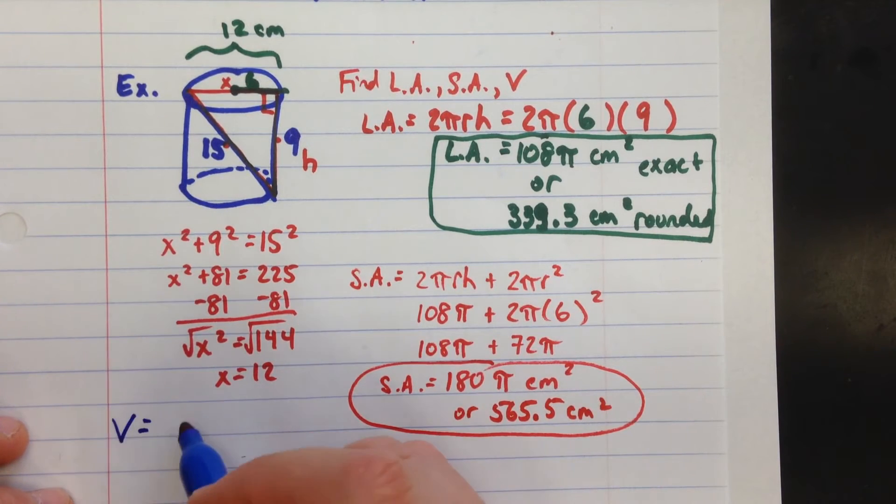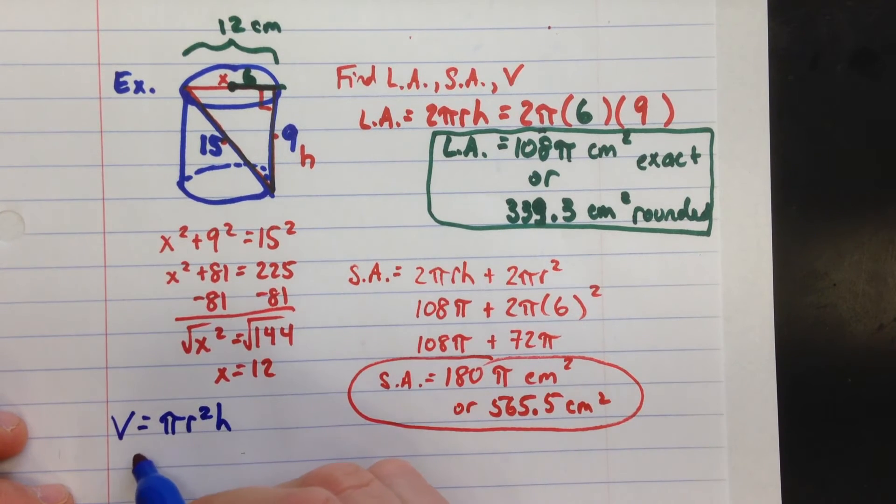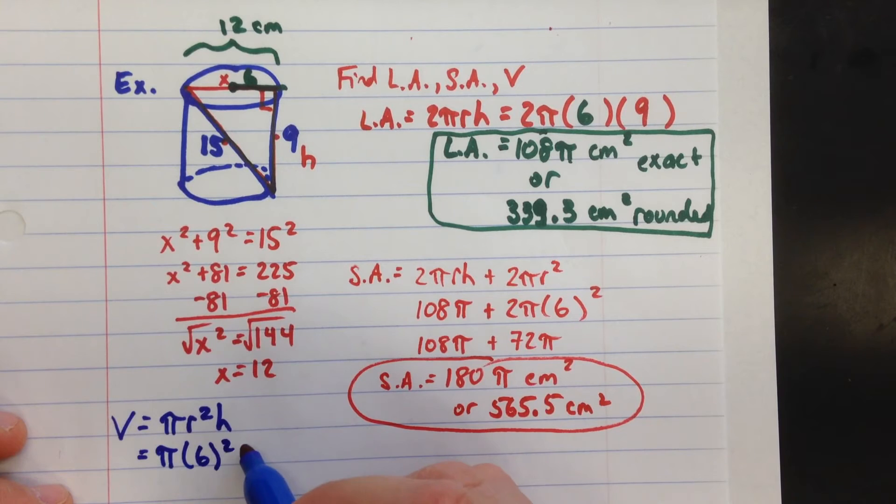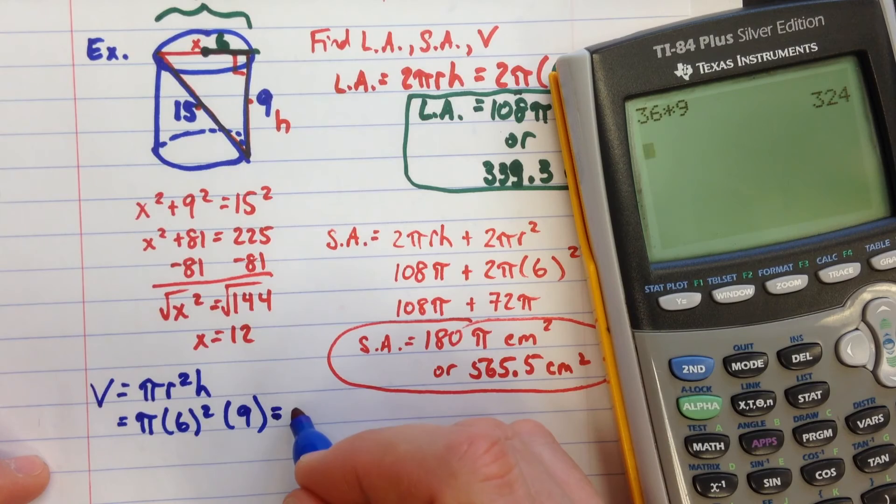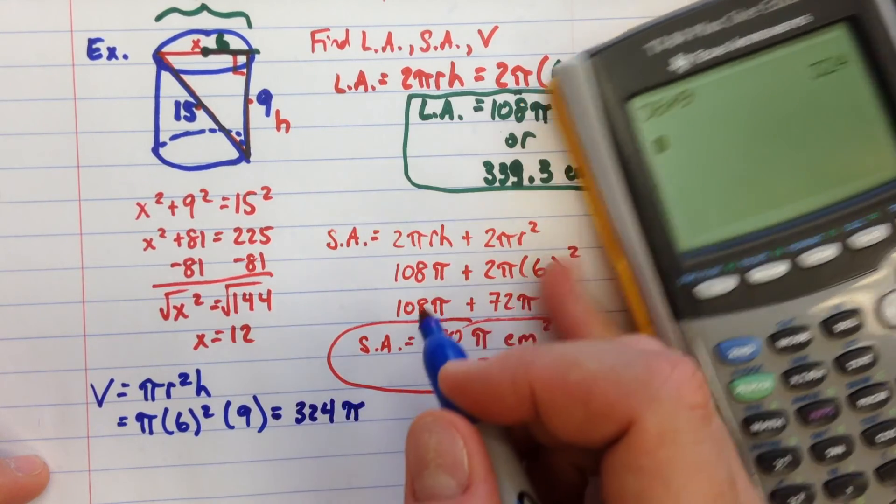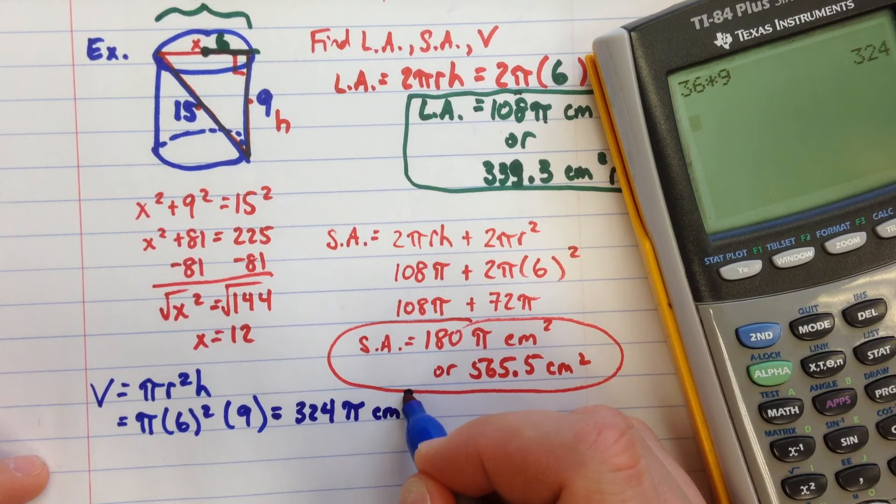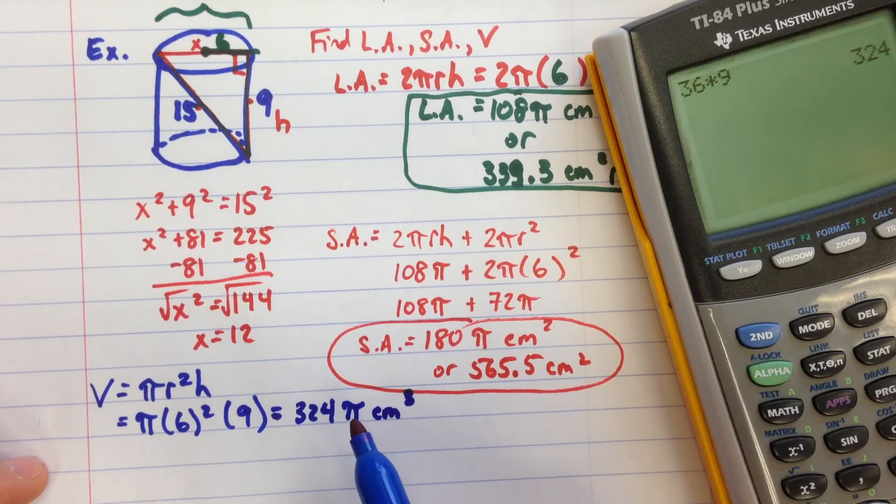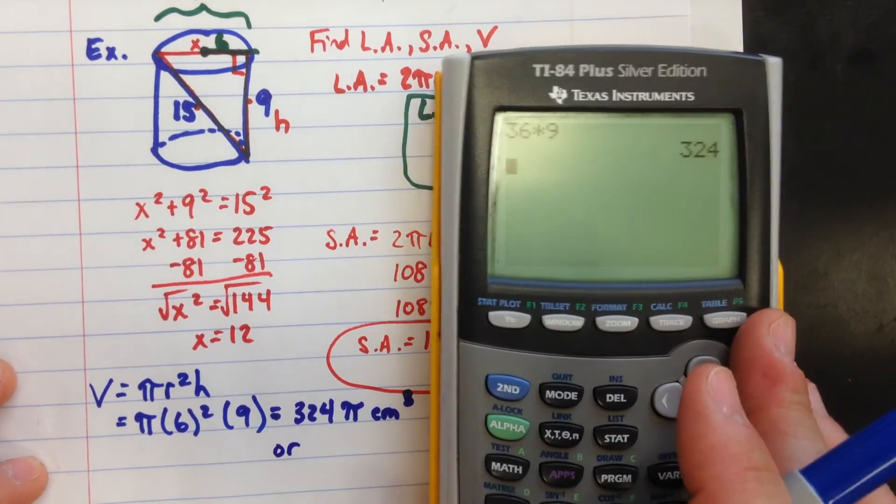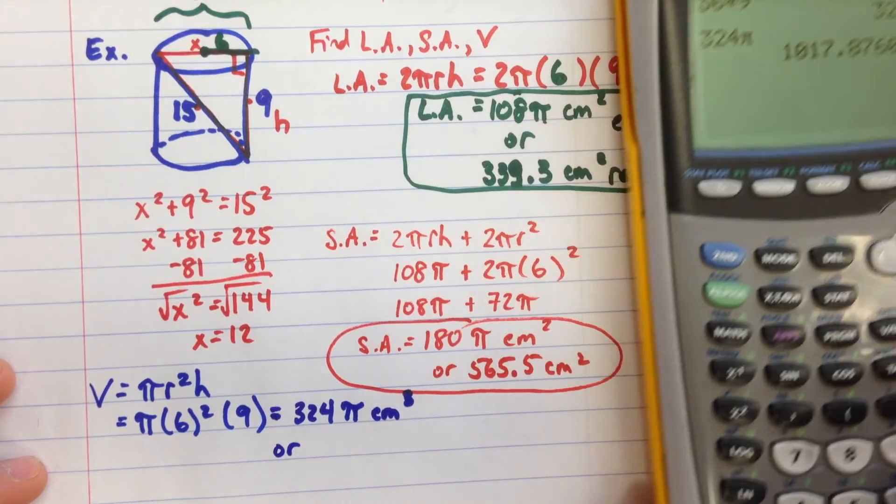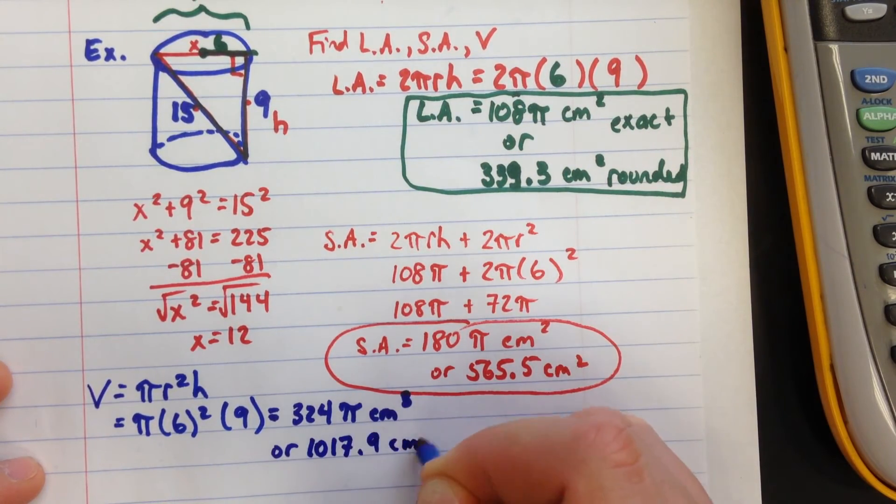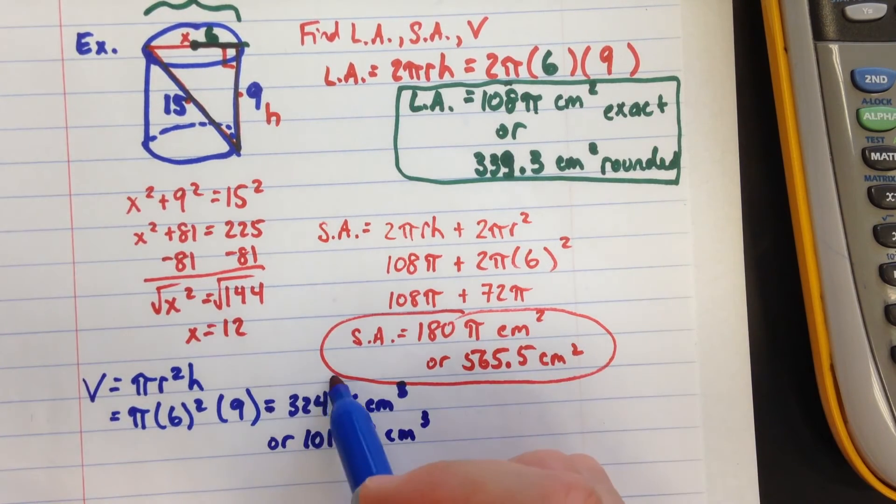Last one is the volume. The volume is πr² times the height. At this point, we've already got the radius is 6 and the height is 9. So 6² is 36 times 9, and then π: 1017.9 cm³. Those are your answers there.